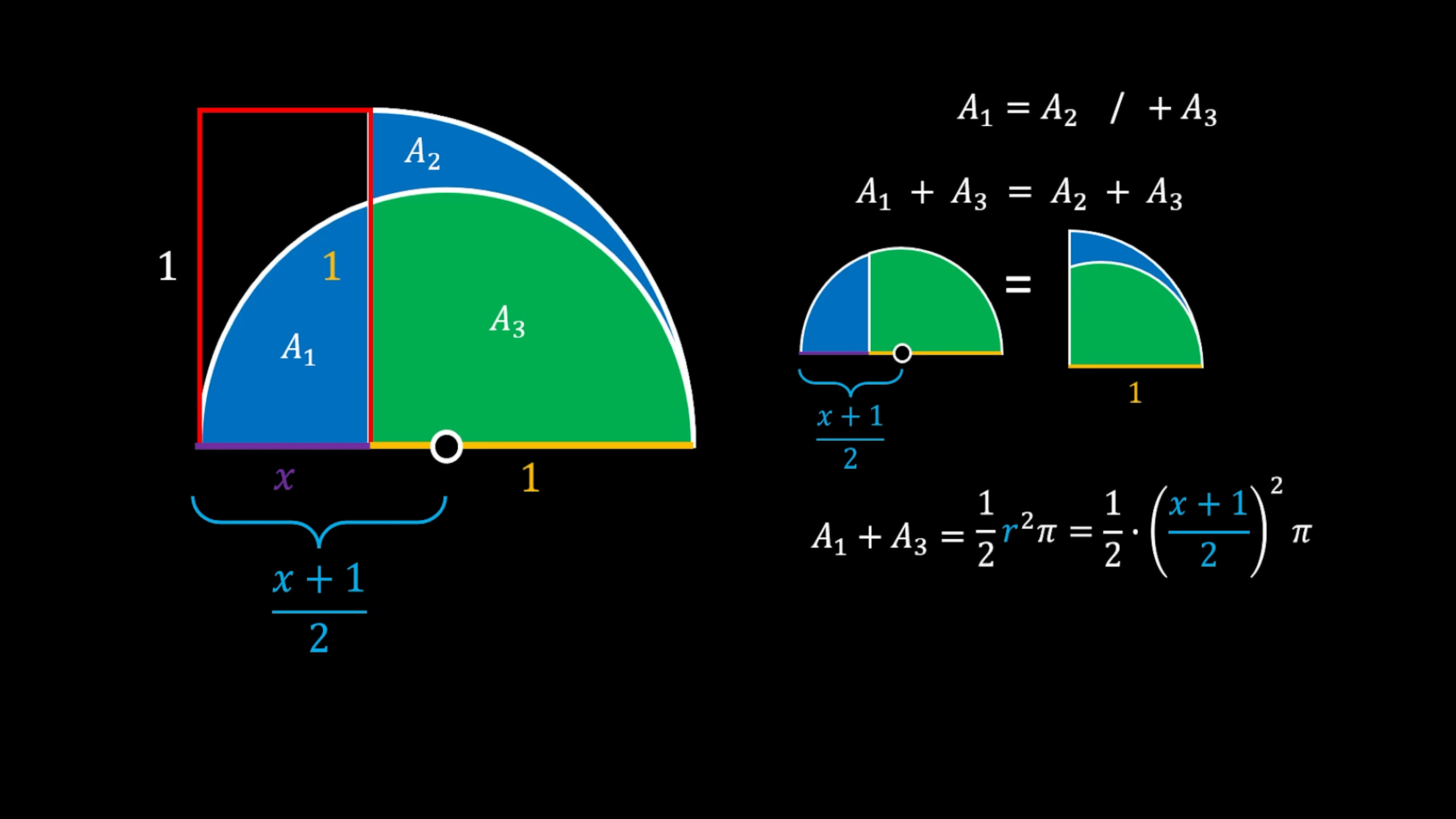We can do the same for areas A₂ + A₃, which represents the quarter circle. That area equals (1/4)πr². In this case, r equals 1, so that is (1/4)π(1)².